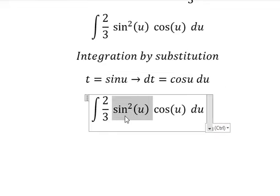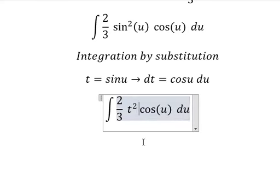This one we change by t and we have t squared. This one we change by dt.